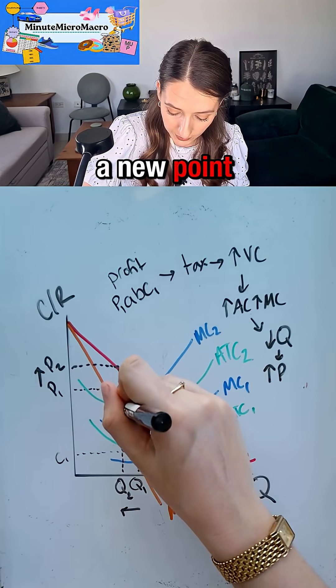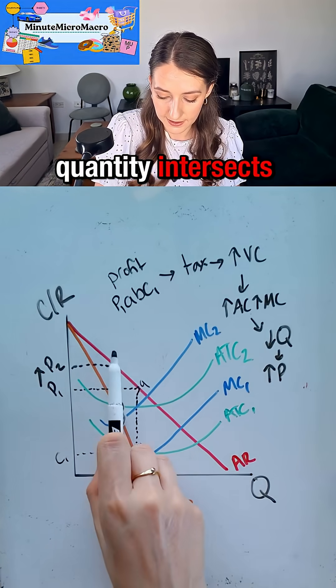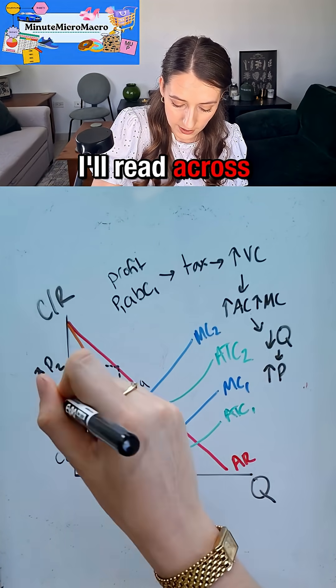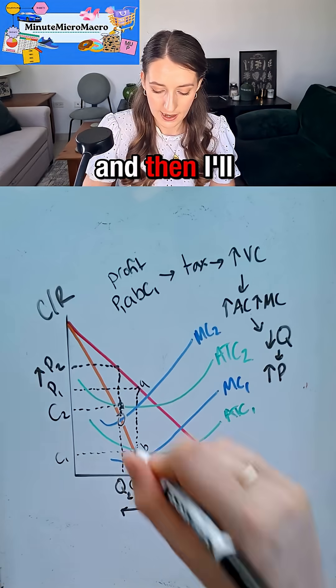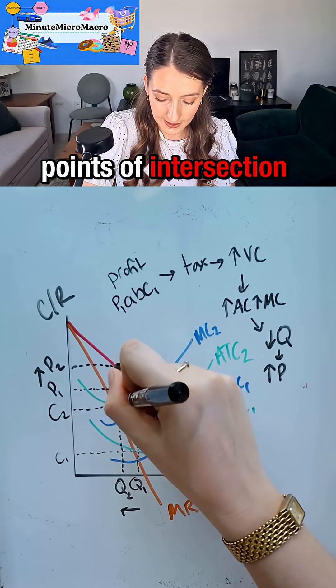I've also got a new point where my new quantity intersects my new average total cost. I'll read across and I'll call that C2, and then I'll label my two points of intersection D and E.